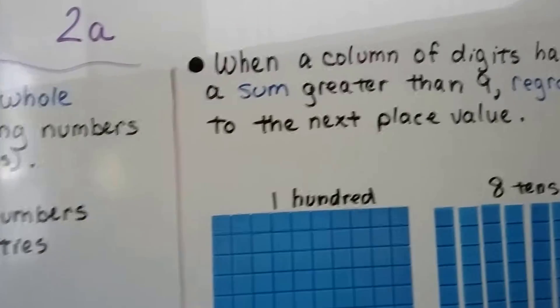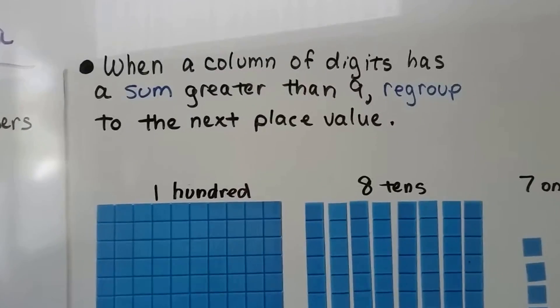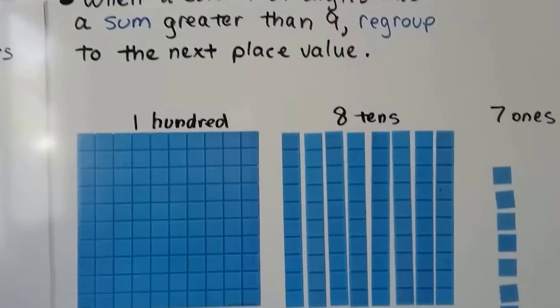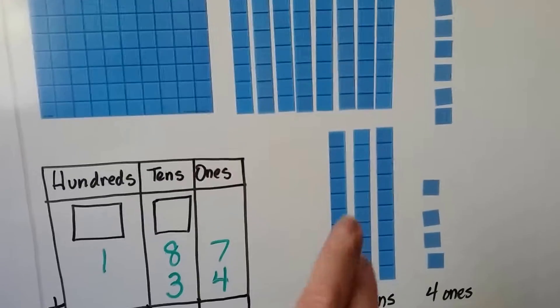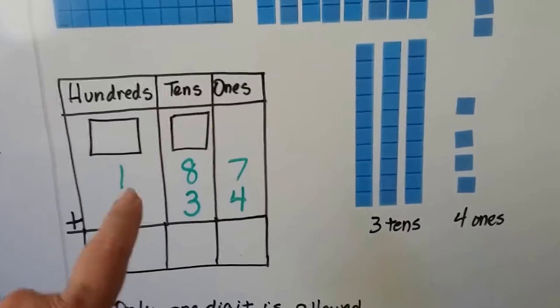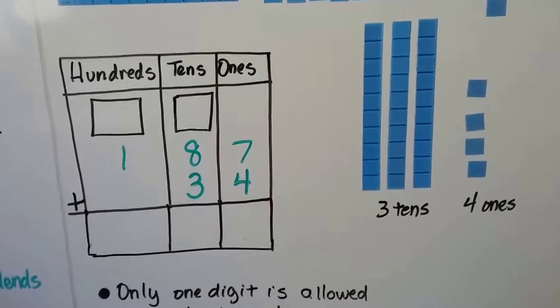And when a column of digits has a sum greater than 9, we regroup to the next place value. So here we have 100, 8 tens, and 7 ones, and we want to add 3 tens and 4 ones. So we have 187 and we want to add 34.